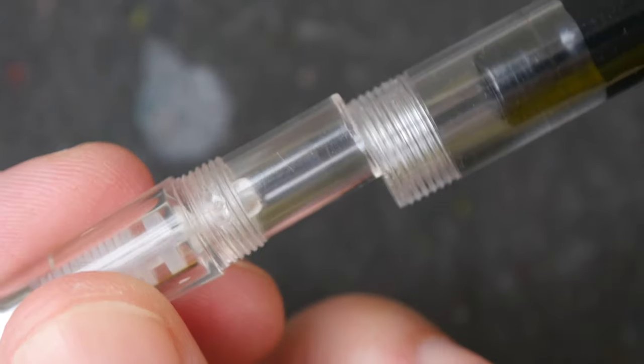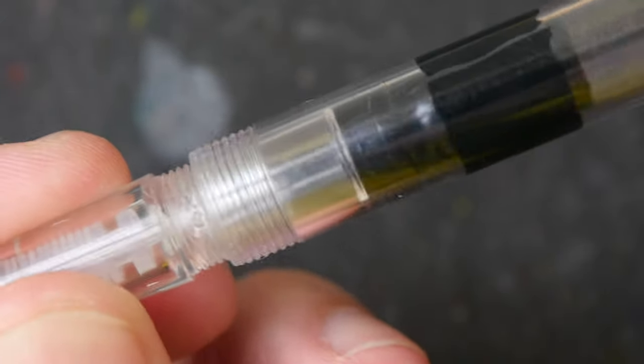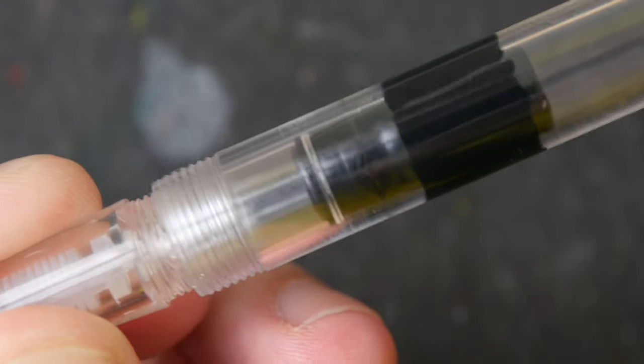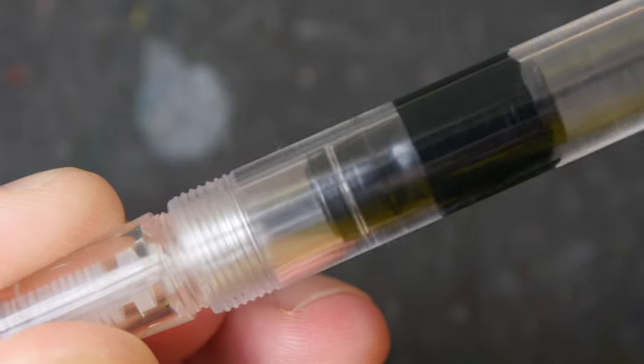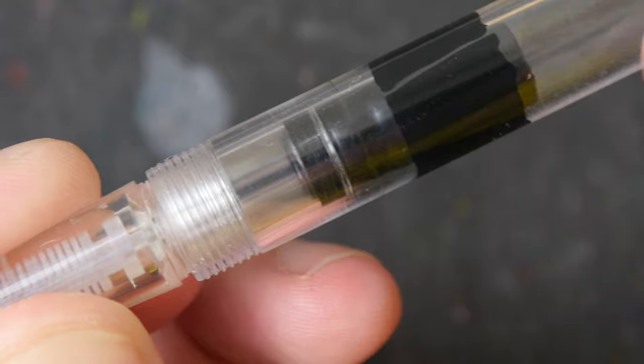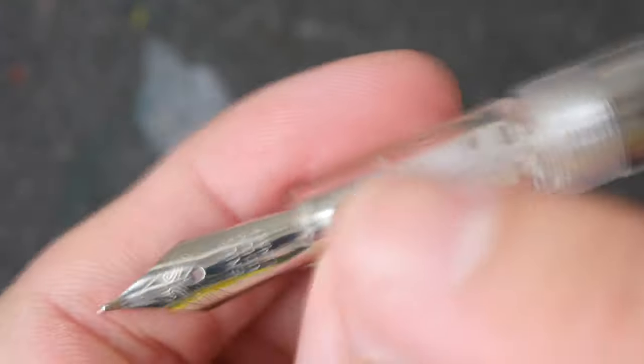So when you put the grip section back, you can see this part here will come into contact with the black stopper to form a seal, so the ink can only flow through the black stopper to the feed.